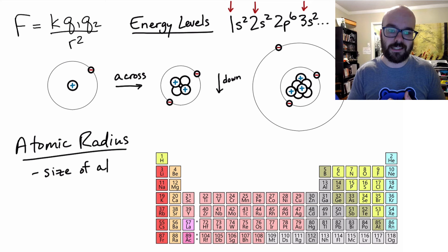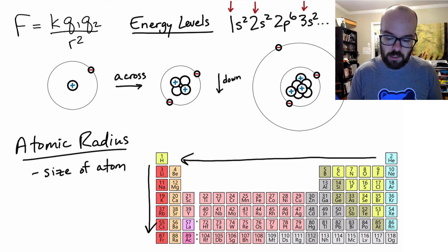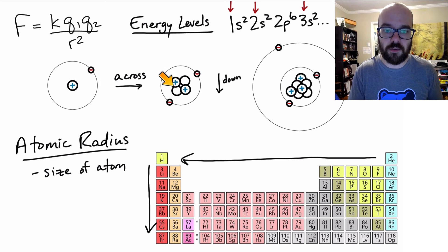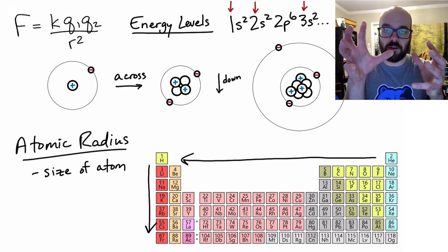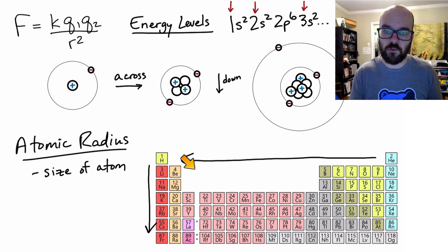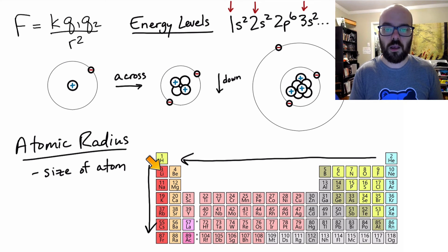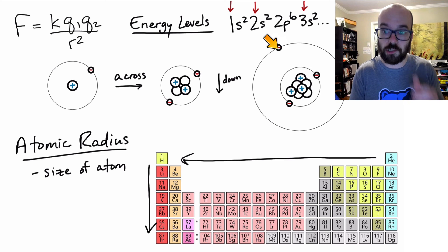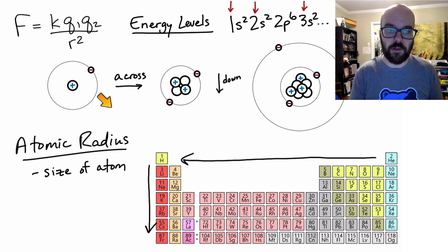Next is atomic radius — just the size of the atom. As we go from hydrogen to helium, we have more protons, which is a greater effective nuclear charge, which produces a greater force pulling those electrons in closer. So as we move to the right, the atomic radius gets smaller. As we move down — say from helium to lithium — we're adding to a higher energy level, and therefore that atom gets bigger.